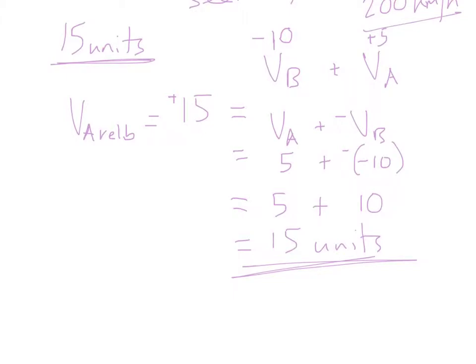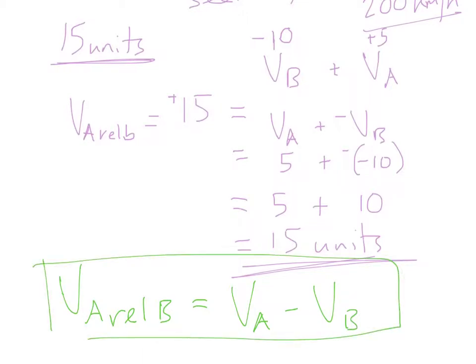and we'll write this as a rule in a nice bright colour. Our rule for the velocity of A relative to B has been the velocity of A minus the velocity of B. And in this case it gives us the minus of the negative. But anyway, that's our rule. We're going to stick with that, and we're going to move on to a two-dimensional example.